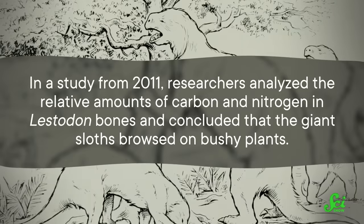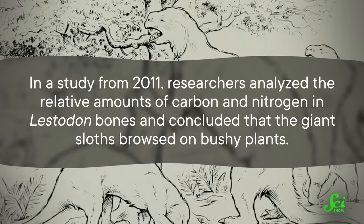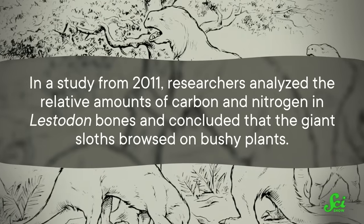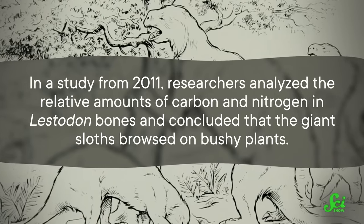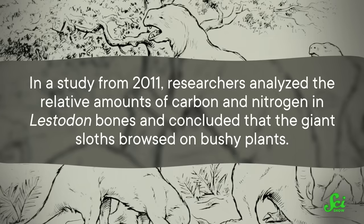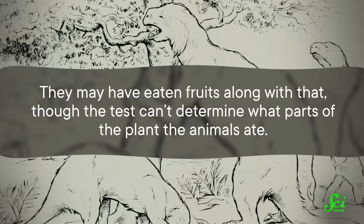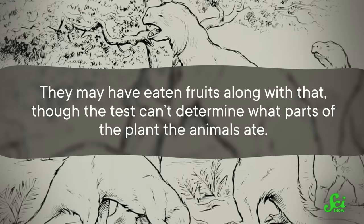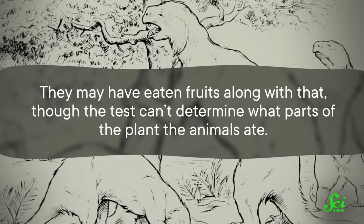Like, I live at the same time and place as poison ivy, but I do not eat poison ivy. And would not, and hopefully will never. And figuring out exactly what these guys did eat is complicated. In a study from 2011, researchers analyzed the relative amounts of carbon and nitrogen in lestadon bones, and concluded that the giant sloths browsed on bushy plants. They may have eaten fruits along with that, though the test can't determine what parts of the plant the animals ate.